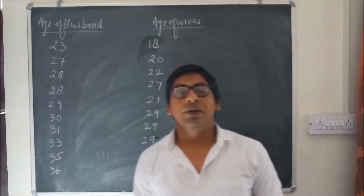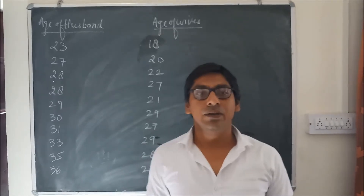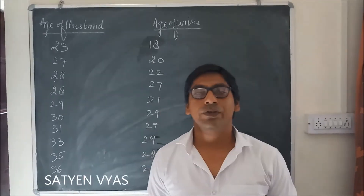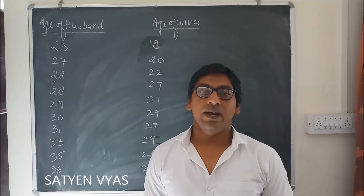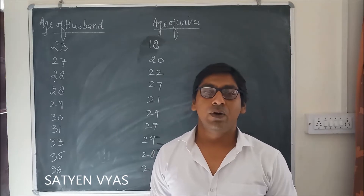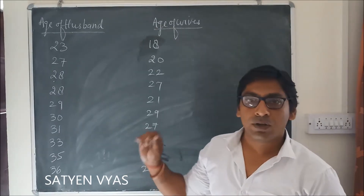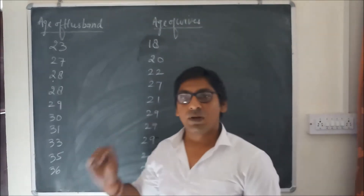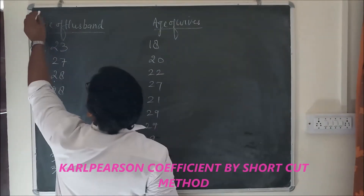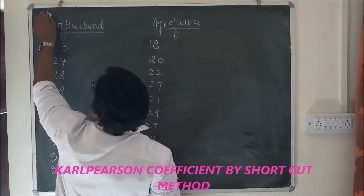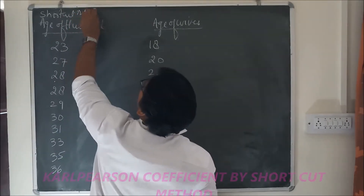Hello everyone. In the last lecture I explained the calculation of coefficient of correlation by direct method. Now in this lecture I am going to explain the same example with the help of the shortcut method — how to calculate Carl Pearson coefficient of correlation by shortcut method.